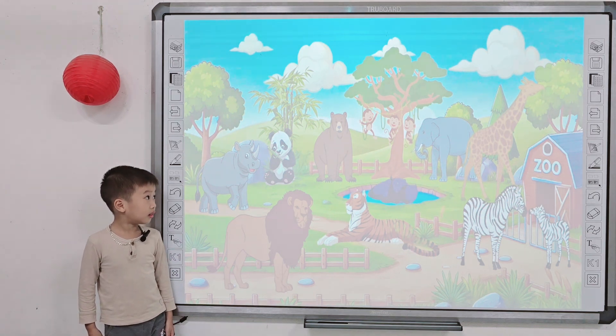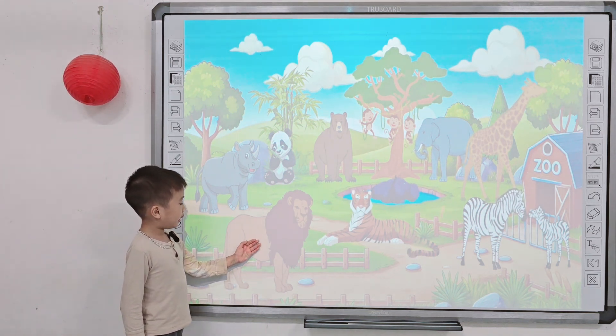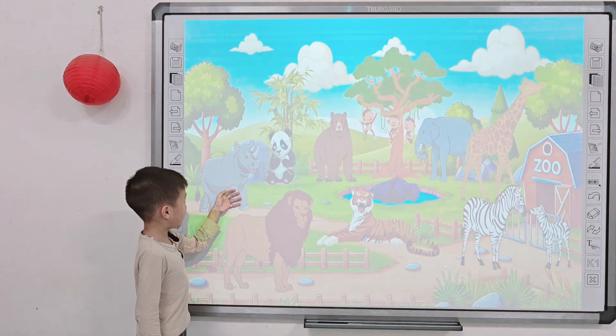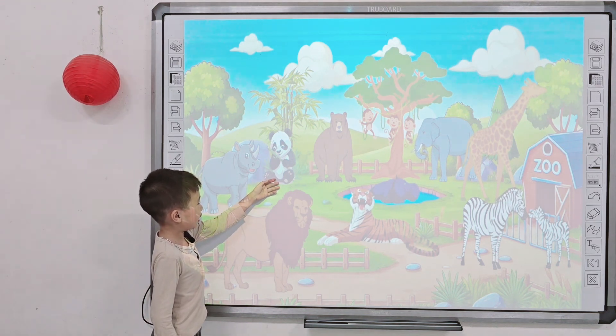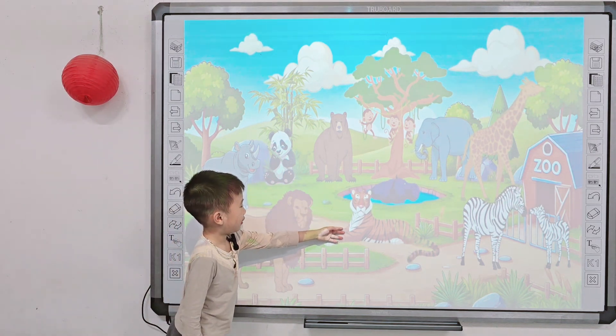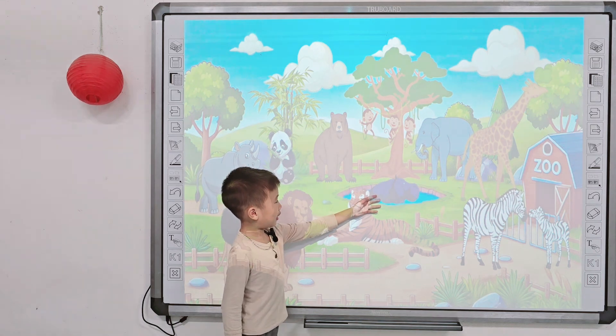I go to the zoo. I see a lion. I see a zebra. I see a panda. I see a tiger. I see a hippo.